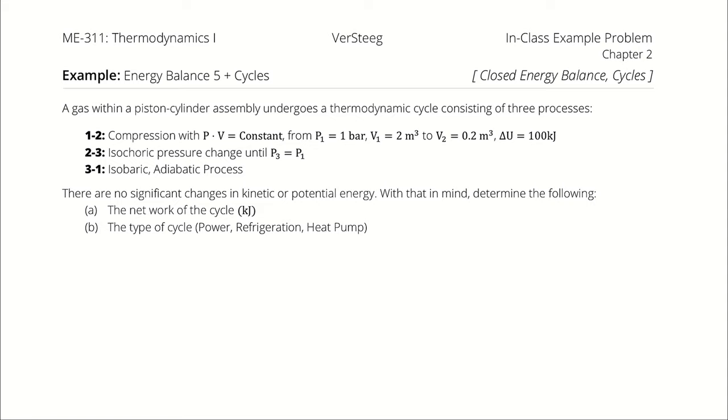First, the net work of the cycle in kilojoules, and then the type of cycle: power, refrigeration, or heat pump.